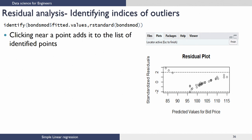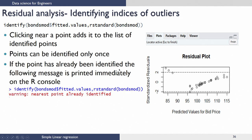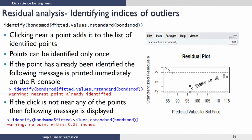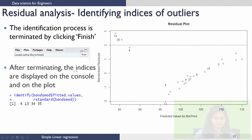Clicking near a point adds it to the list of identified points. All these points can be identified only once. If a point has already been identified and you click near it again, you will get a warning which reads 'nearest point already identified'. If you do not click near any of the points, a message is displayed saying 'no point is identified within 0.25 inches'. Once you have identified all the outliers, you need to click the finish button on the top right corner of the graphical window. You can also press Escape to finish. After terminating, the indices are displayed on the console and on the plot.